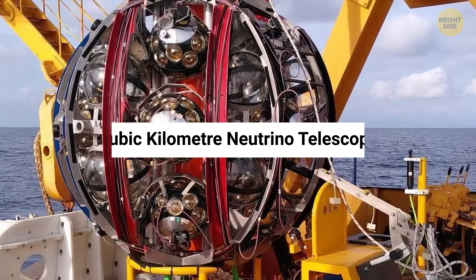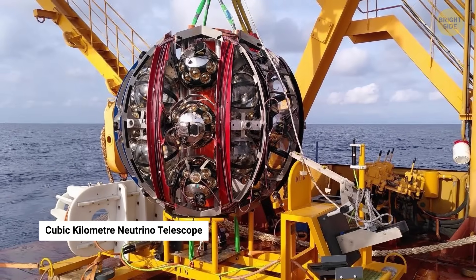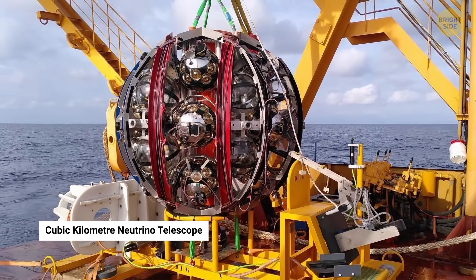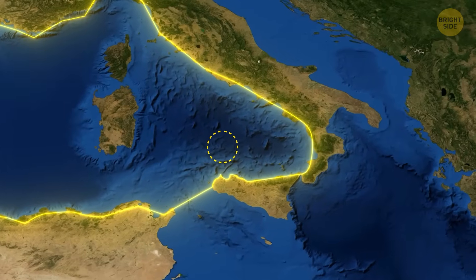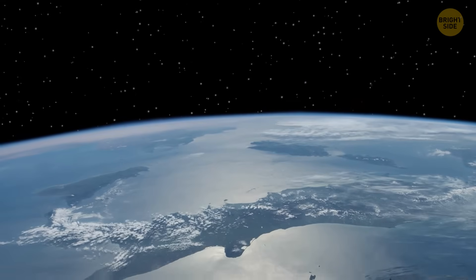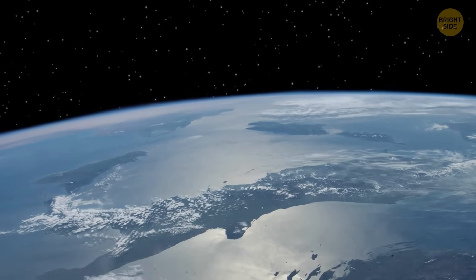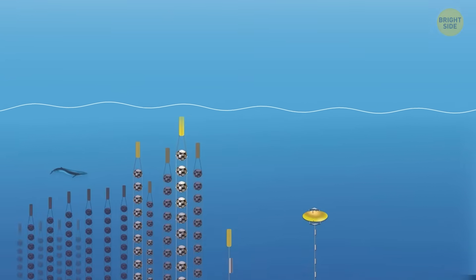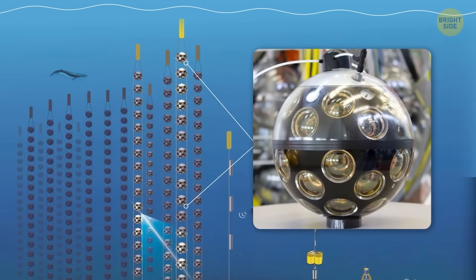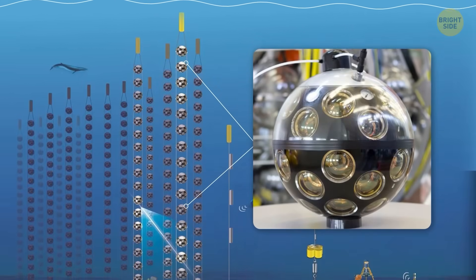The cubic kilometer neutrino telescope is a huge project designed to catch them. It's going to cover a cubic kilometer of the Mediterranean with underwater detectors, basically turning part of the sea into one giant telescope. These telescopes don't look at stars. Instead of using lenses or mirrors, the telescope uses glass spheres that hang from long cables under the water.